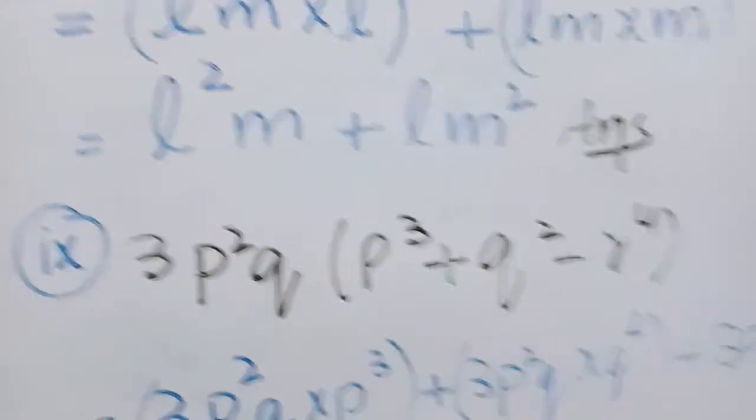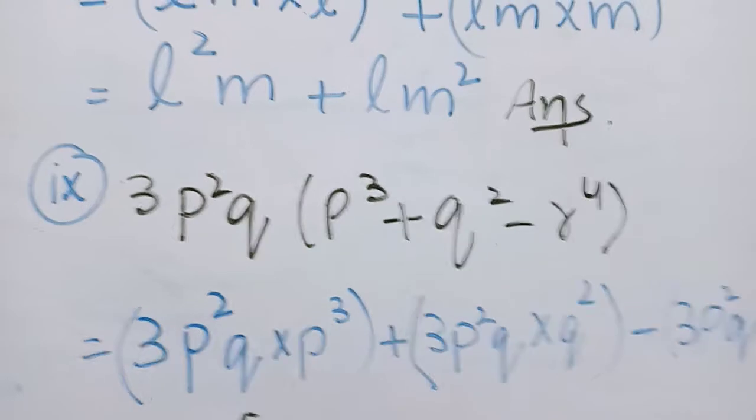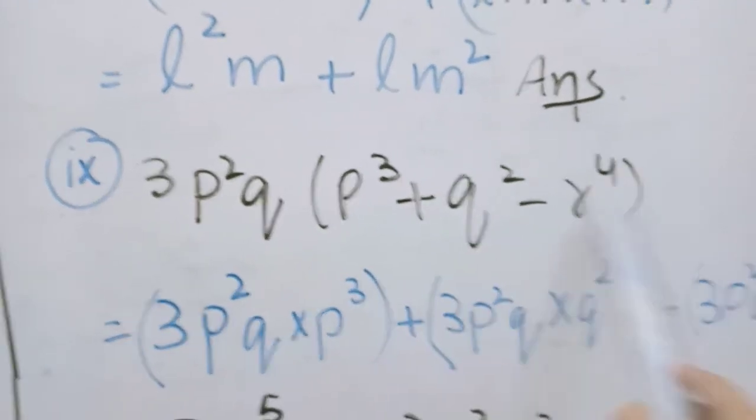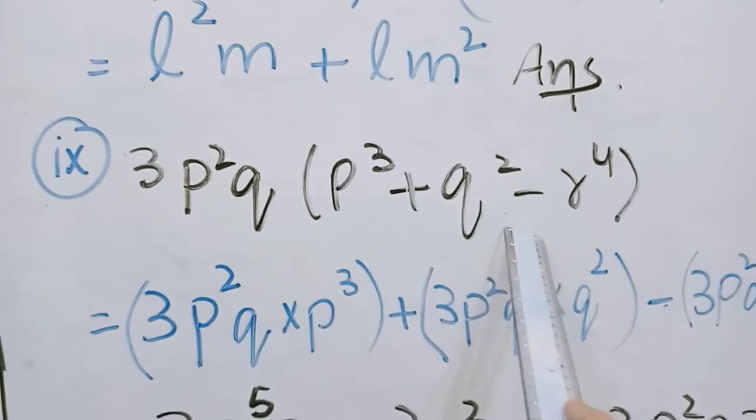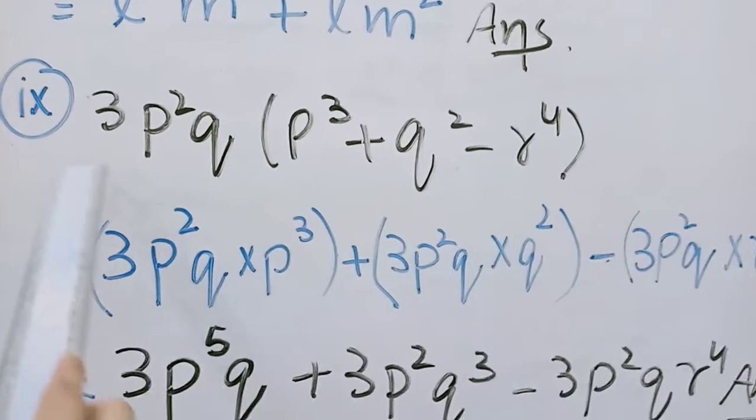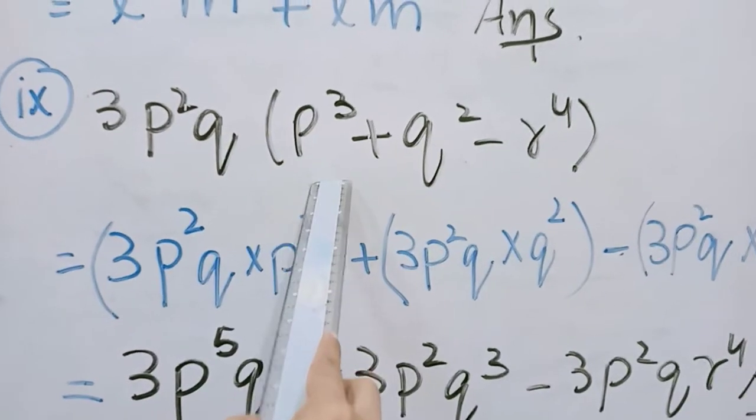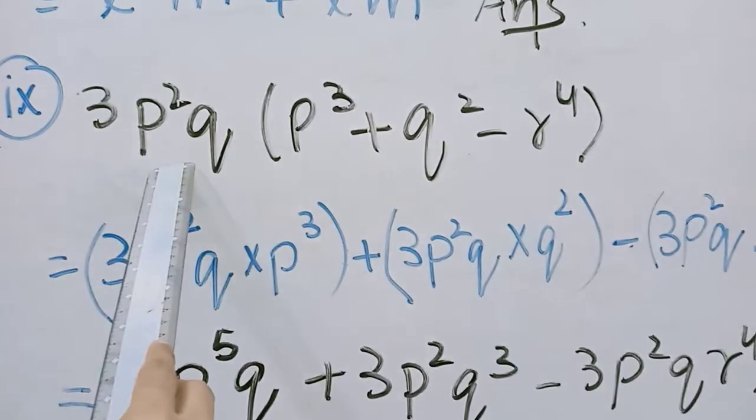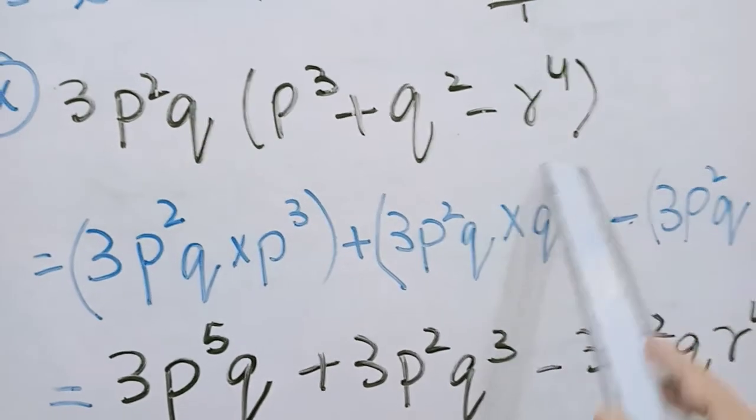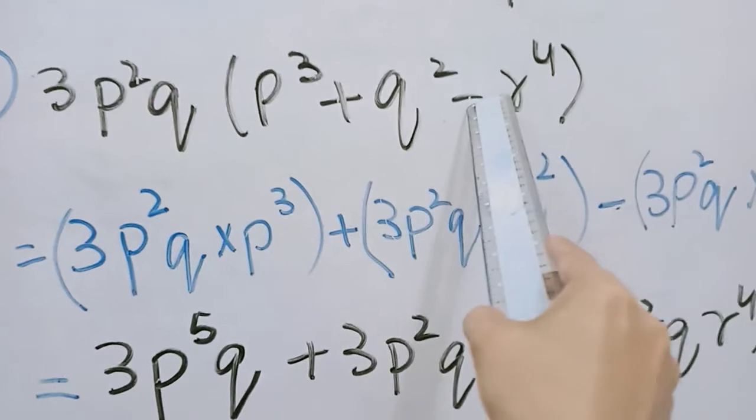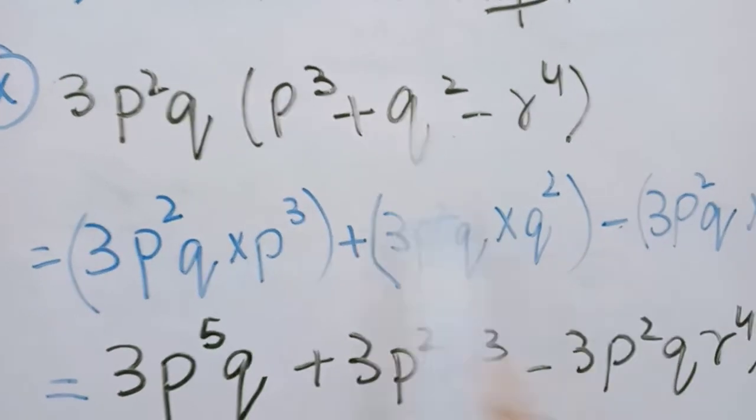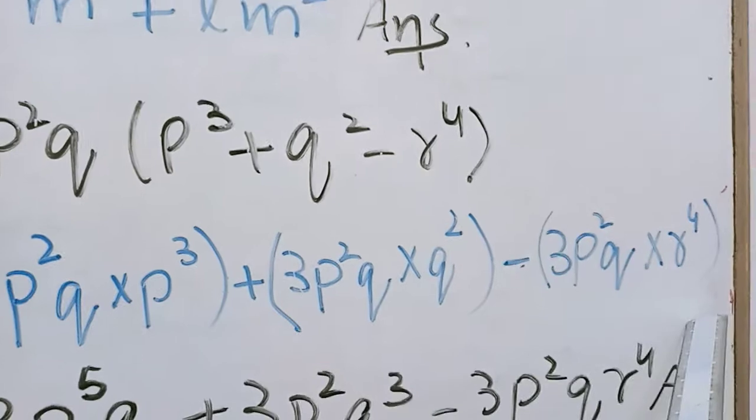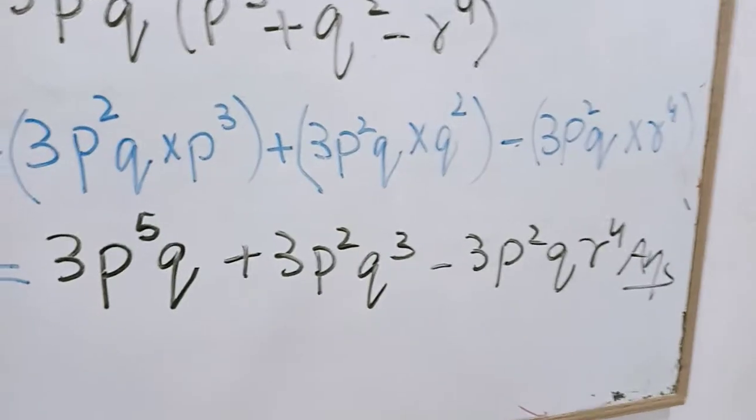And in next question we have monomial here and trinomial, because it has 3 values, it has 3 terms. P square q plus q square minus r raise power 4. So 3p square q first multiplied p cube. So we are writing bracket. It is separated by the plus sign. And again 3p square q multiplied with q square. Write here, we close in brackets. And here is minus sign, so we write here minus sign. So again 3p square q multiplied r raise power 4. Now students, how we can solve it.